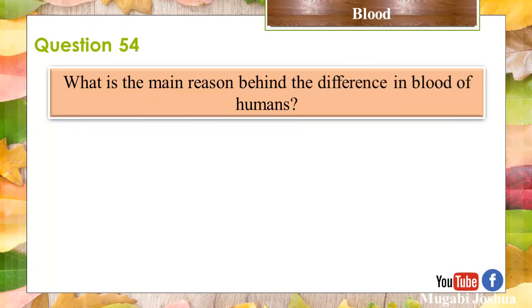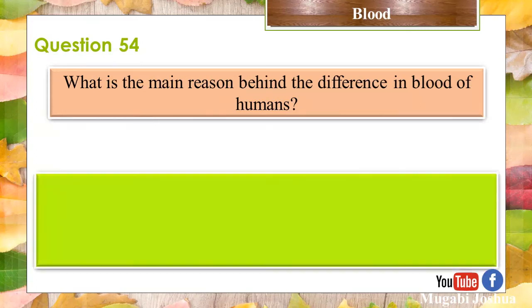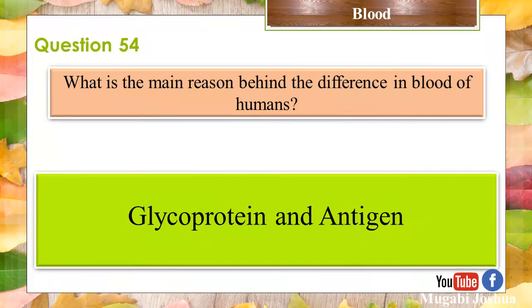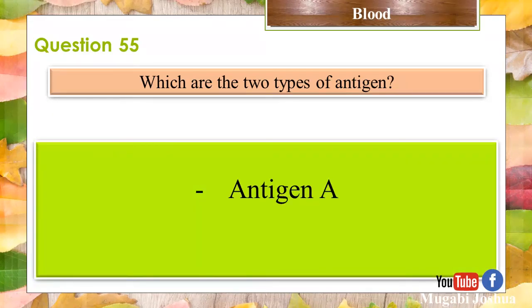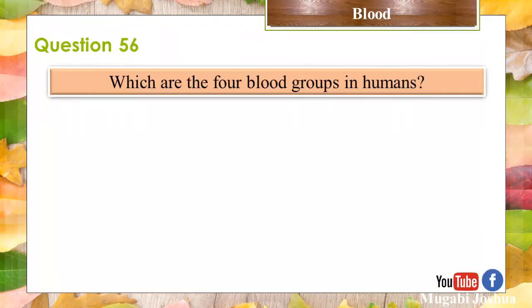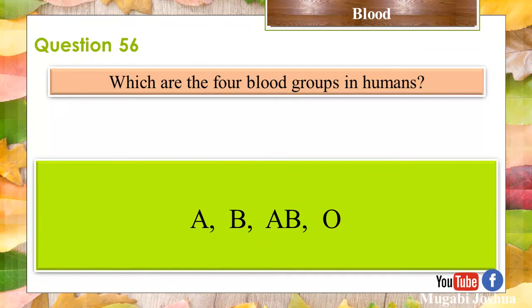Question 54: What is the main reason behind the difference in blood of humans? Glycoprotein and antigens. Question 55: Which are the two types of antigens? Antigen A and Antigen B. Question 56: Which are the four blood groups in humans? A, B, AB, and O.